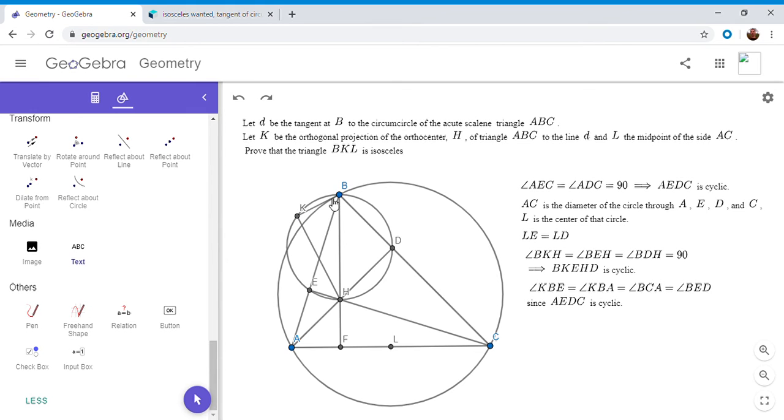So angle KBE, well, that's obviously equal to KBA. And then since the line at B is tangent to the circumcircle, KBA has to equal angle BCA, because the angle between a tangent line and a chord is equal to an inscribed angle that intercepts that chord. So KBA equals BCA.